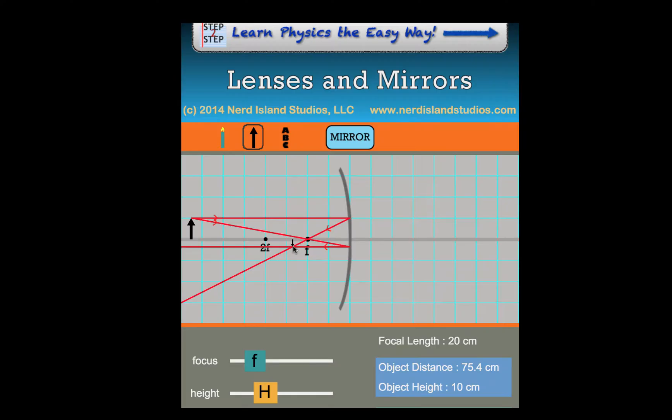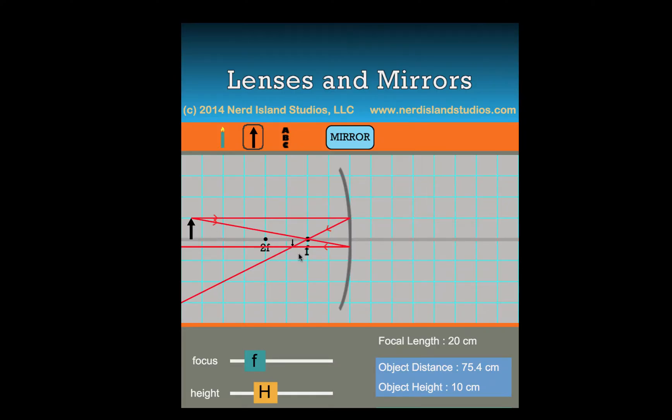So SALT, which means compare the image to the object. It is smaller. It is inverted or upside down. It is located between F and 2F. And because it's in front of the mirror, and the job of the mirror is to reflect light, this would be a real image. So smaller, inverted, between F and 2F, and real.